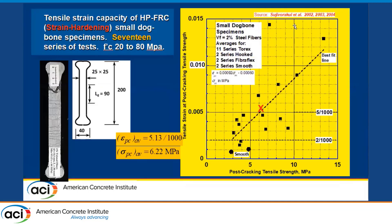This is another set of data from Suji Vorakul on small tensile specimens — only one inch by one inch in cross section. Again the same trend is observed; however, we see some data well above five over a thousand, which is not surprising because the specimens are smaller and most of the fibers are well-oriented. The average strain capacity is 5.13 over a thousand at a stress of 6.22 MPa.